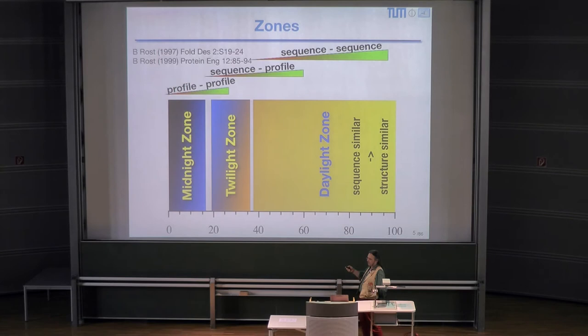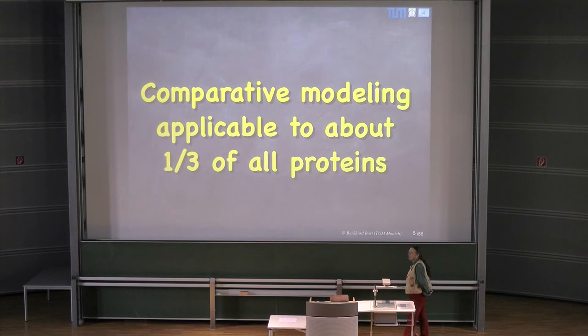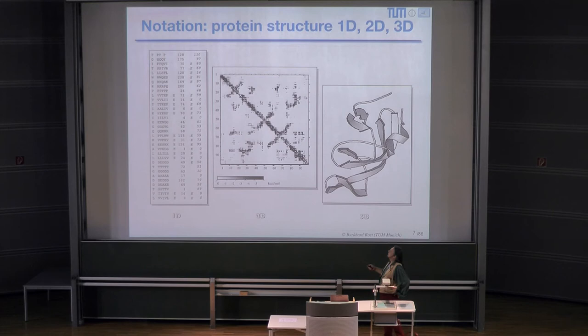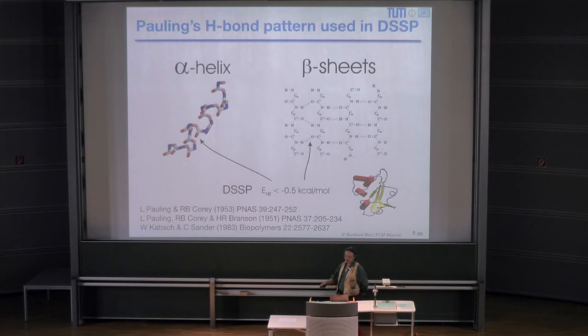Sequence uniquely determines structure — proteins thrown into solvent adopt a unique three-dimensional structure. For sequences of proteins that are very similar, we can align them and identify similarity in structure. Then there is the daylight zone, the twilight zone — we need sequence profile alignment, profile-profile alignments, and the midnight zone. We can predict structure for about one third of all known proteins through comparative modeling, and for the remaining roughly two thirds, we can clearly do 1D prediction, and secondary structure prediction is one example of that.